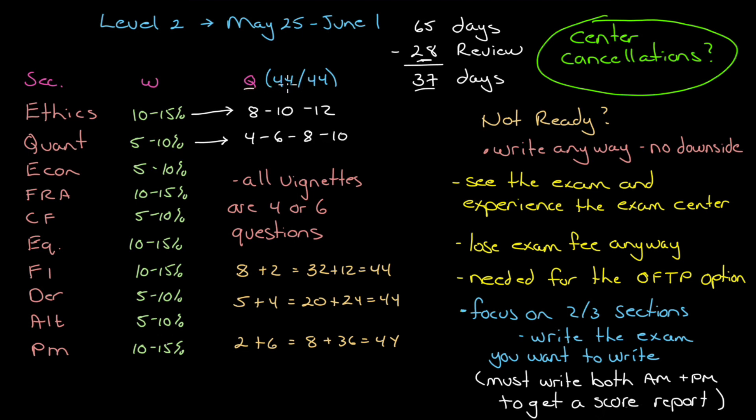And the questions, you will have 44 questions in the AM, and you will have 44 questions in the PM. Each question is worth three points, but I don't know that the three points matter. There's 44 questions in total. All vignettes on the exam are going to be either four or six questions. So I did some quick calculation to see all the different possibilities at which we could arrive at 44 points.